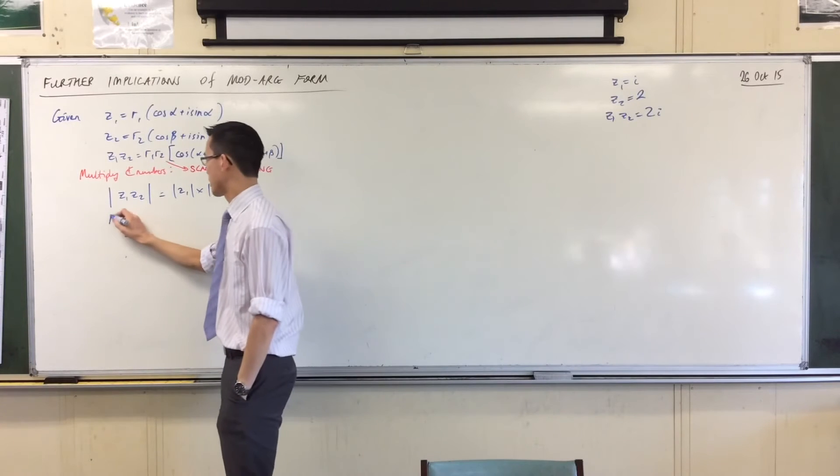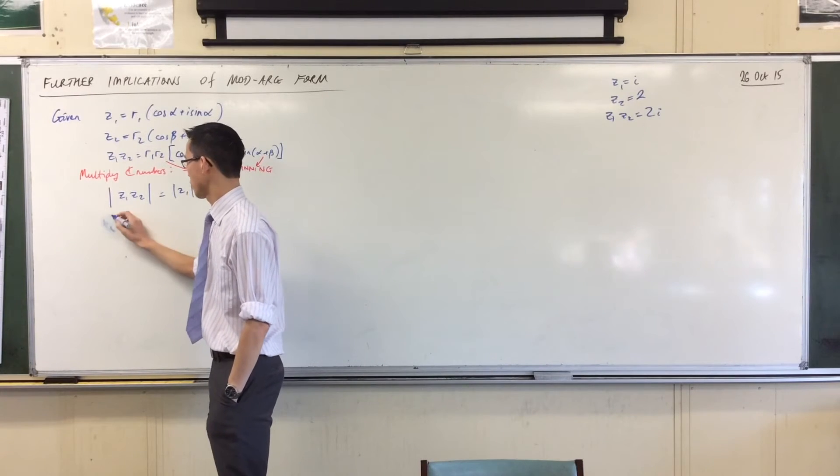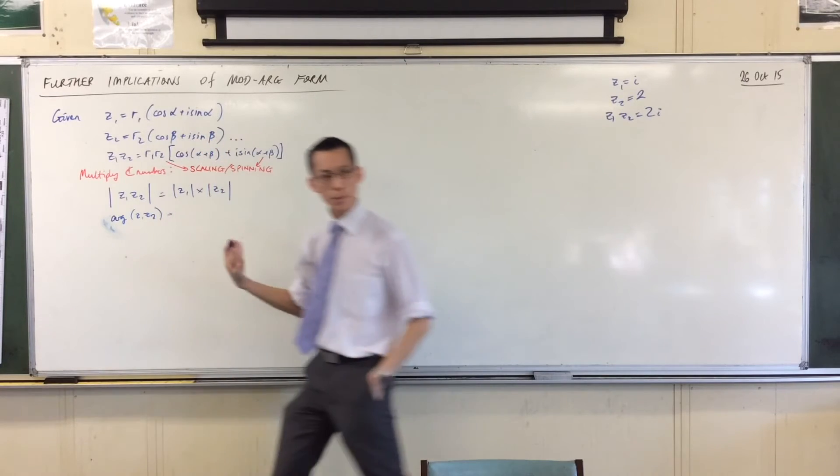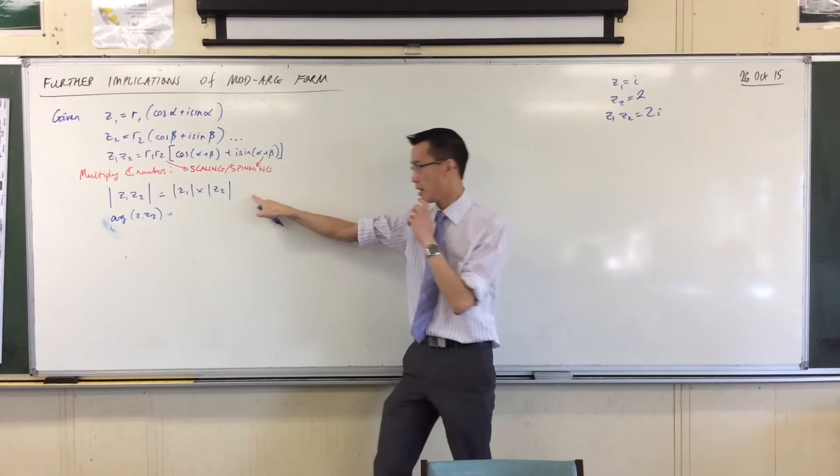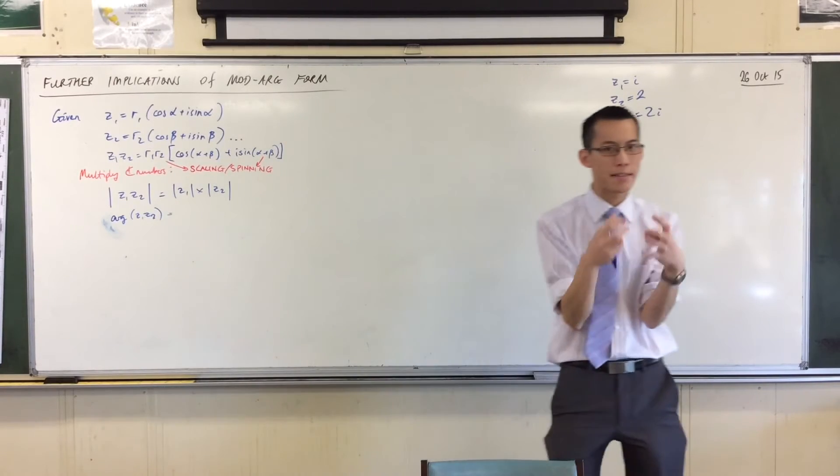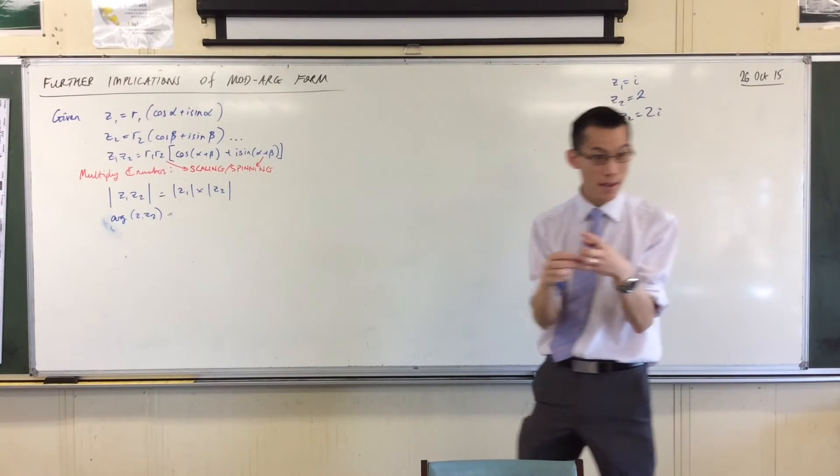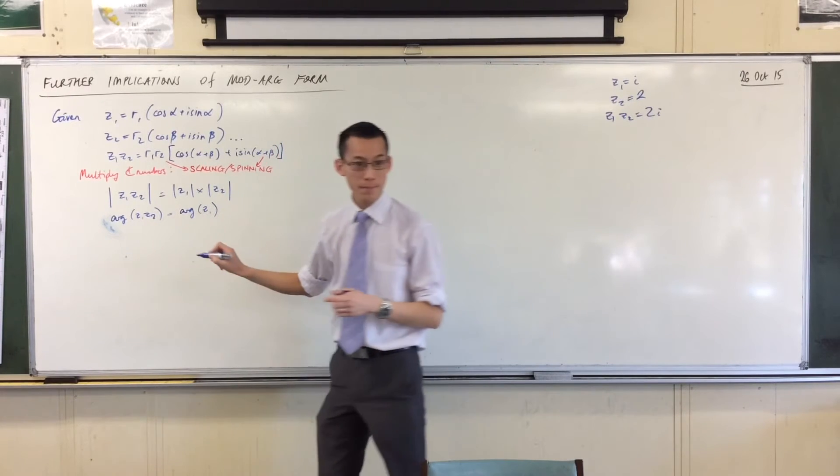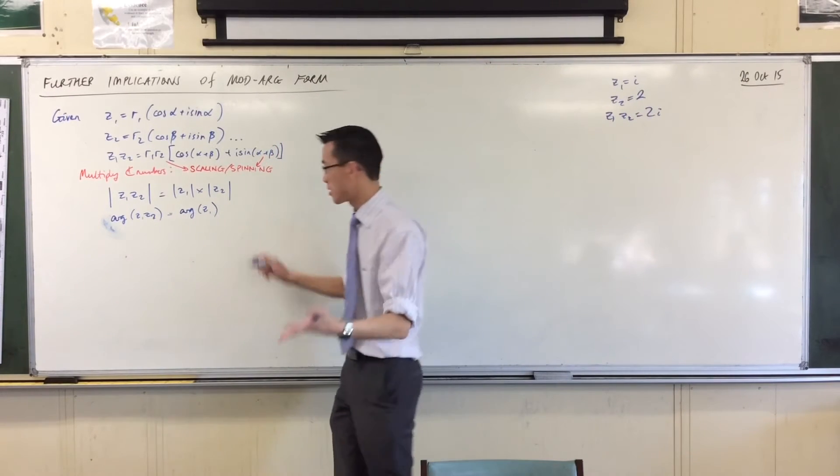What about the argument? I'll go lower on the board actually. If multiplying mods gives me this relationship, then if I have this and I know that this is a product, what can I say about the argument of the product? So I've got arg(z1*z2) equals the argument of the first one, there's the first angle, plus the other one.